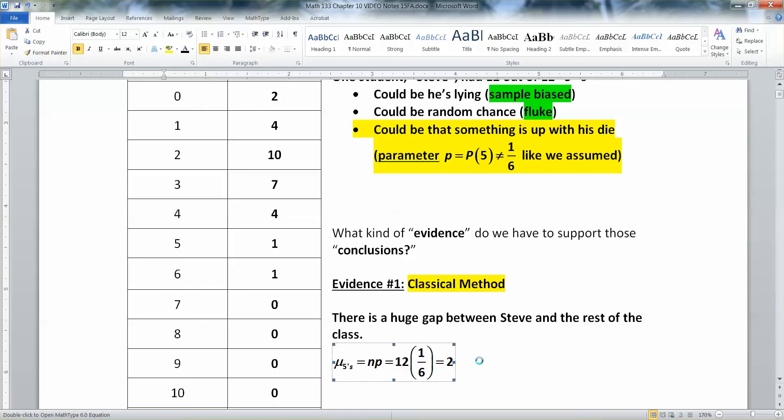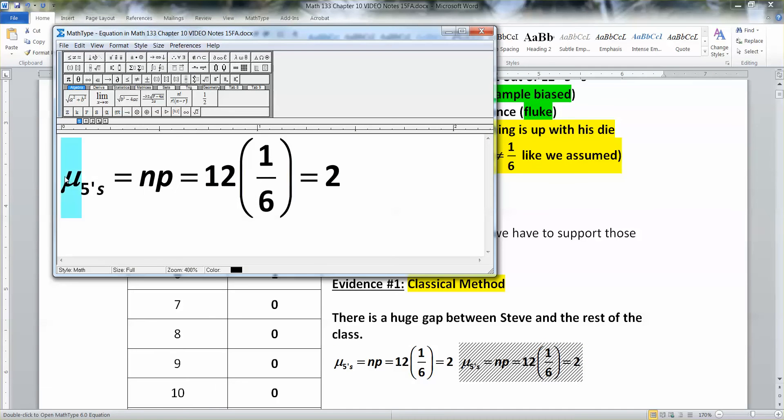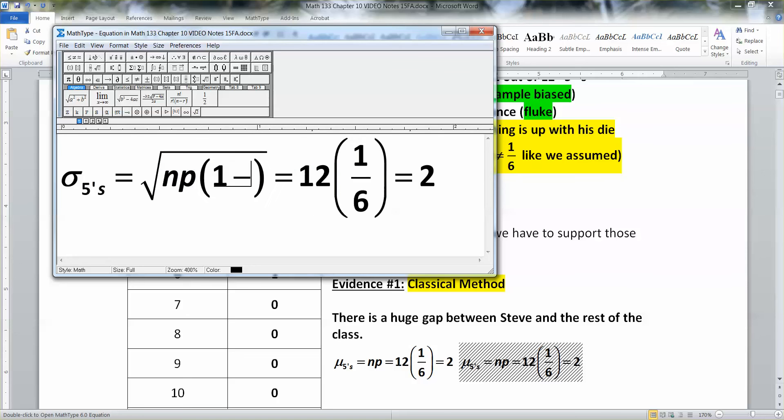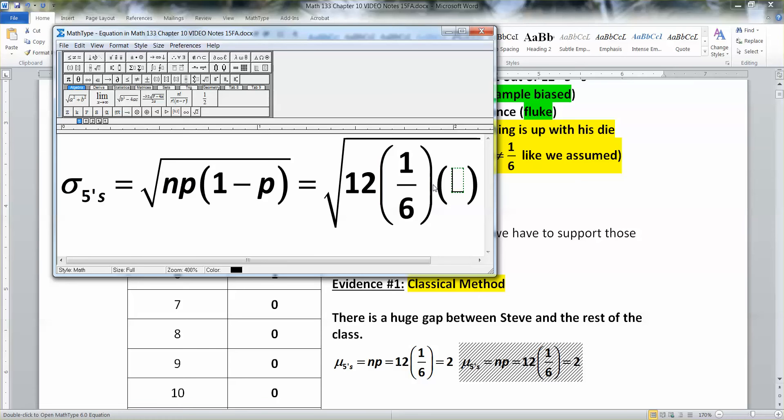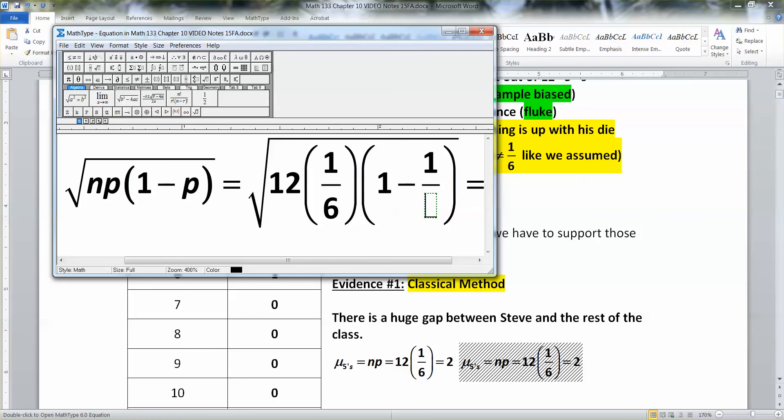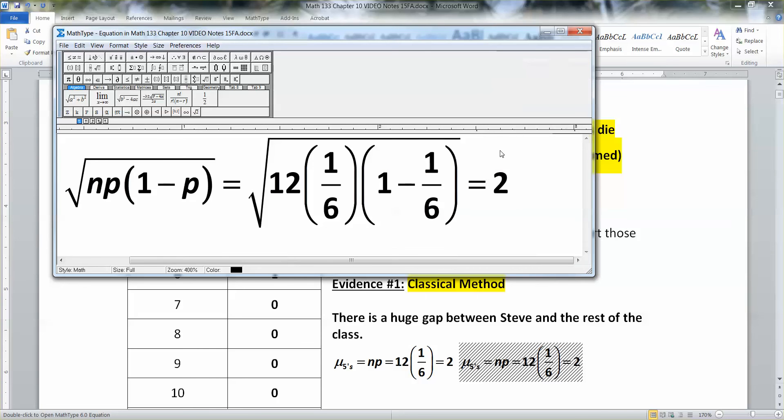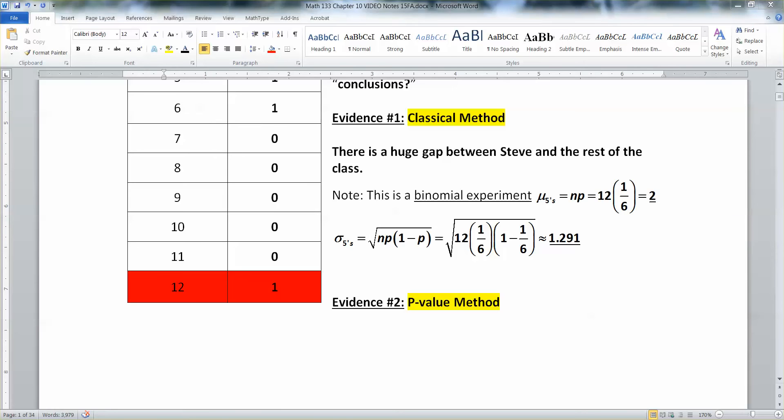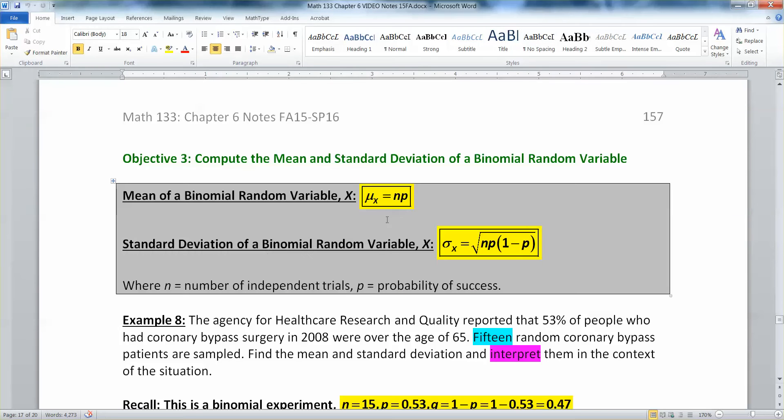The standard deviation, we can also figure out because we learned how to do that in section 6.2. It was the square root of n times p times 1 minus p, which is the square root of 12 times a sixth times 1 minus 1 sixth. Which if I just grab a calculator and do it, I'll get 1.291 approximately.